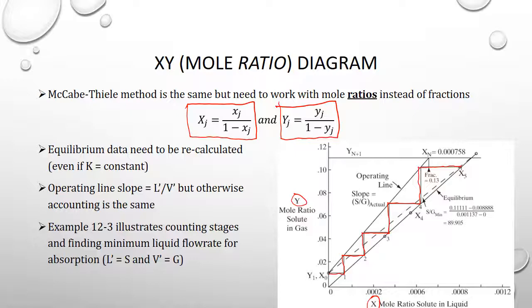One thing we must do is recalculate our equilibrium data in terms of mole ratios. Normally equilibrium is expressed in terms of mole fractions, so we need to translate every mole fraction into a mole ratio for both the liquid and gas phases. In the book, example 12-3 illustrates this for a particular problem — that's what this graph represents. The result gives a set of equilibrium data that looks approximately like a straight line, though it isn't perfect.